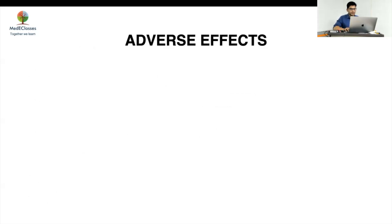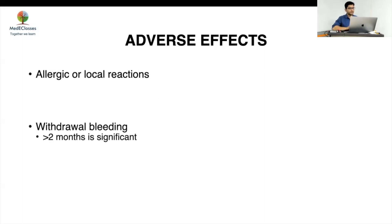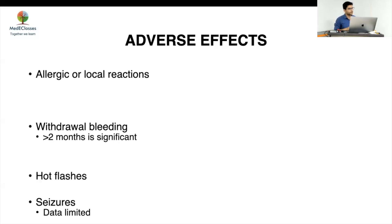Adverse effects of leuprolide are minimal. Local reactions and mild pain may occur, which usually regresses. Allergic reactions are more common with histrelin implants given subcutaneously than with IM injections. Withdrawal bleeding may occur for one or two episodes, but if lasting more than two months, investigate for another cause such as peripheral precocious puberty. In patients who have already established menses and are then given GnRH analogues, continuous bleeding can occur — this is an estrogen withdrawal effect when high estrogen levels drop and there is no progesterone. Treat with progesterone for three to four weeks.